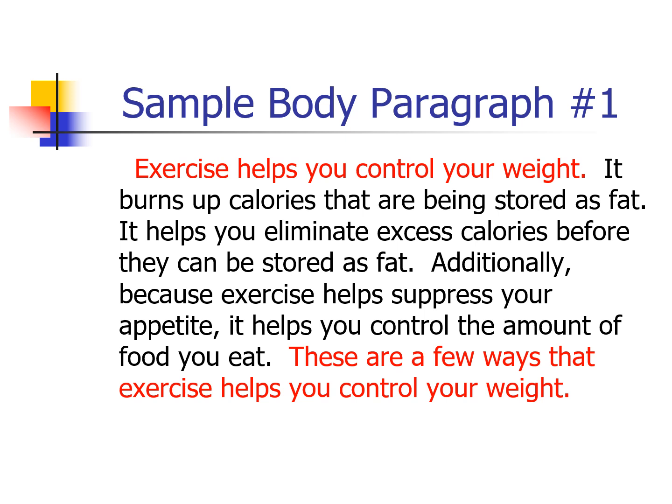Topic sentence for body paragraph one: 'Exercise helps you control your weight.' Thinking back, you know that comes from the thesis statement in your introduction. Then the supporting details: 'It burns up calories that are being stored as fat. It helps you eliminate excess calories before they can be stored as fat. Additionally, because exercise helps suppress your appetite, it helps you control the amount of food you eat.' Concluding sentence: 'These are a few ways that exercise helps you control your weight.' So: topic sentence, supporting details, and then your clincher or concluding sentence.